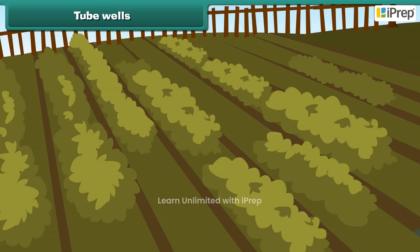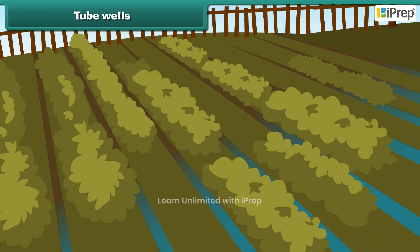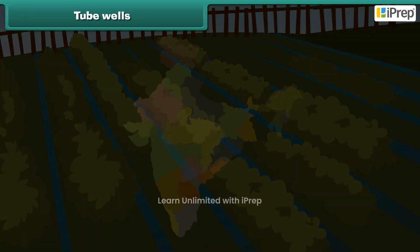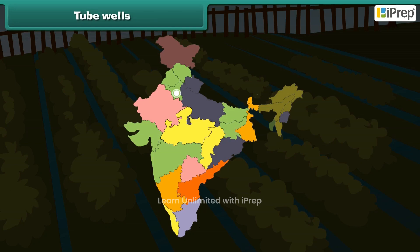Tube wells are very suitable where the subsoil formation is suitable for storing water. In Haryana, Uttar Pradesh, Punjab and Bihar, tube well irrigation is extensively in practice.